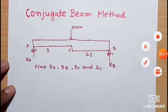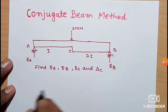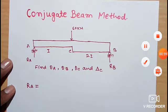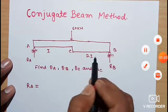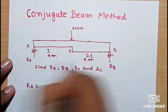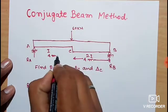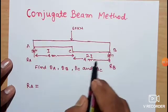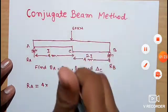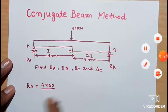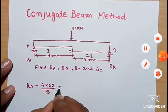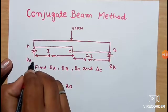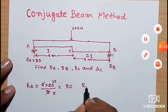First of all, we need to find out Ra and Rb values. The load is 60 kN and the distance is 4 meters on each side. To find Ra, we take the opposite distance: 4 into load 60, divided by total distance 8. So Ra is 30 kN.